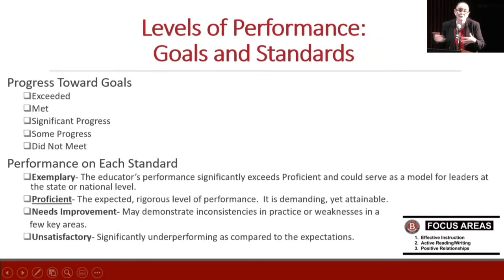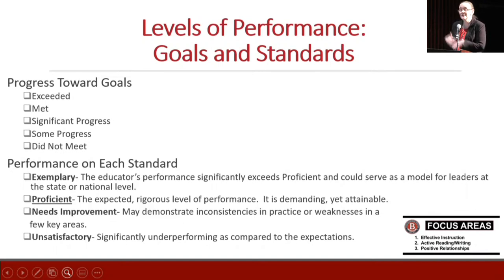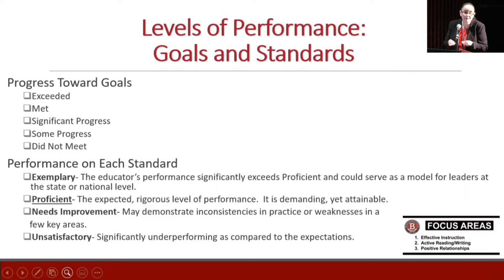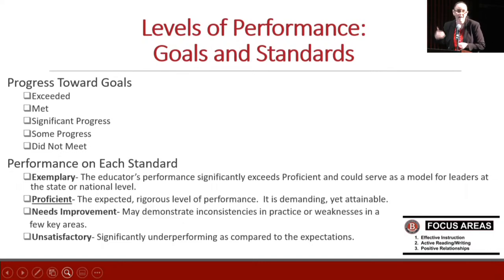The other part of the regulations covers levels of performance. Part of the work of the school committee for the superintendent is to reflect on what the evidence says in terms of movement towards goals. The ratings for that are: exceeded, met, significant progress, some progress, and did not meet. Then there's performance on each standard. I underlined 'proficient' intentionally, because proficiency is really a statement about rigorous, solid, effective practice - whether it's the superintendent, a kindergarten teacher, or an eighth-grade math teacher.